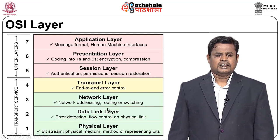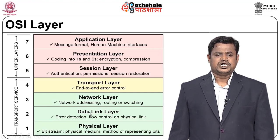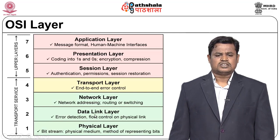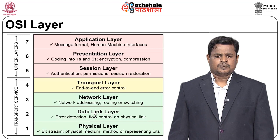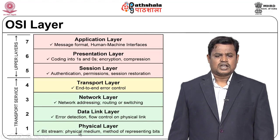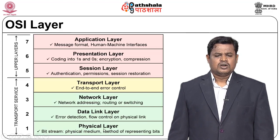The data link layer — the second layer — is very important for end-user machines, as it depends on what technology the user is using. It handles error detection and flow control, which helps manage the flow of data over the network. The physical layer, the lowest layer, converts all 0s and 1s into a bit stream and places them on the physical medium, representing how we distinguish which signal is 1 and which is 0.